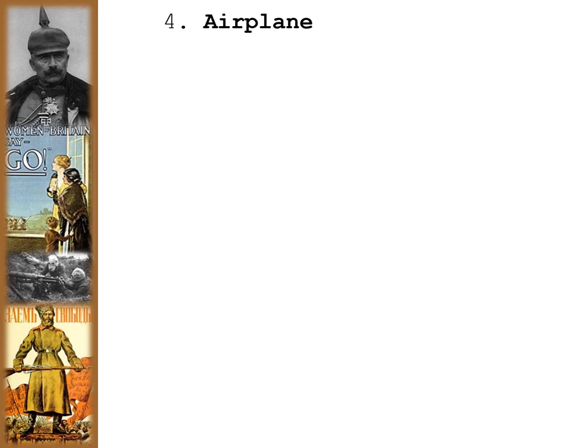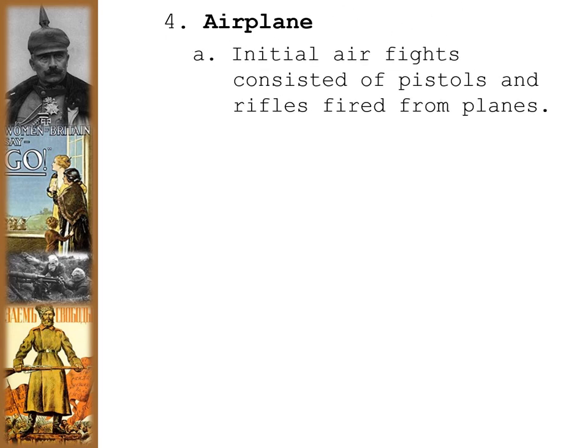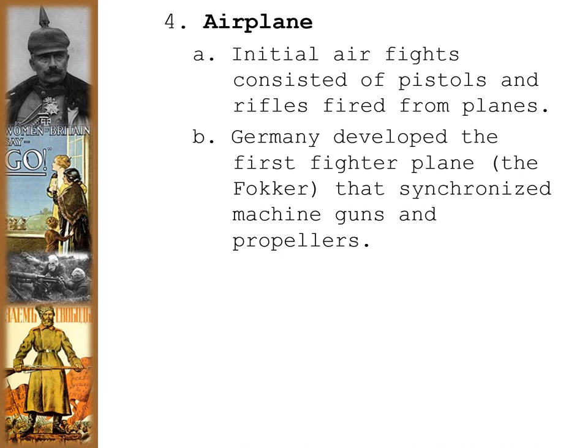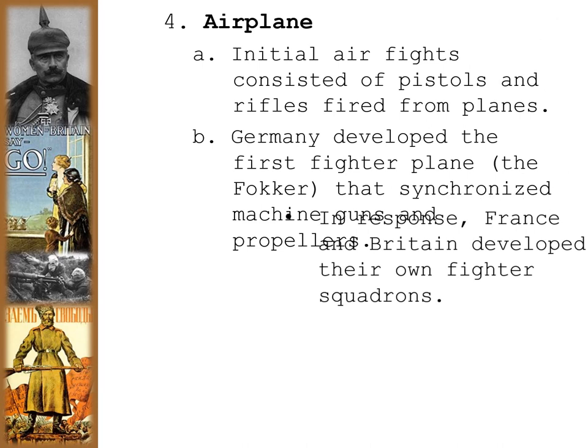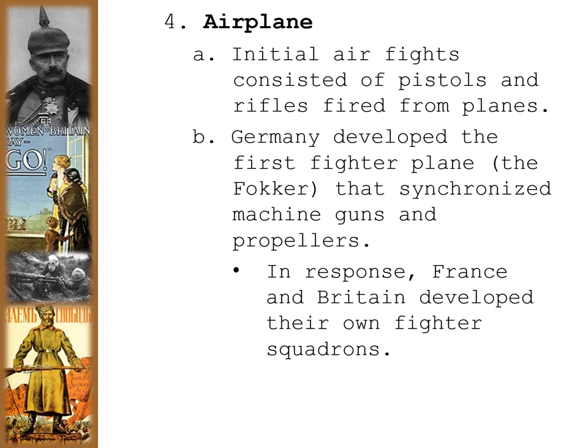The airplane was another new weapon, meaning warfare was no longer just happening on the ground but in the air. Initial air fights consisted of pistols and rifles fired from planes by hand. Eventually guns were mounted on planes — Germany developed the first fighter plane called the Fokker, which synchronized machine guns and propellers so it would not fire through the propellers. In response, France and Britain developed their own fighter squadrons.